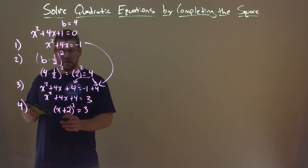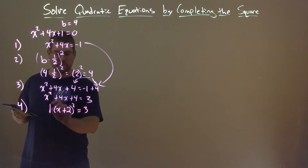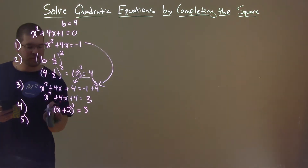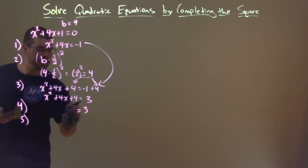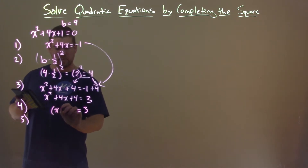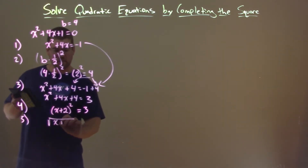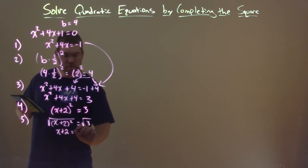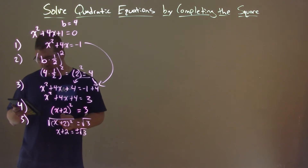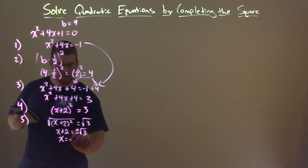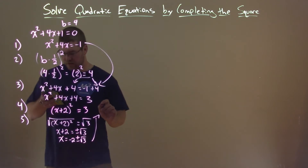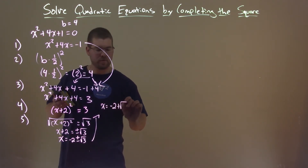We got a 3 on the right side. Then we use the square root property to solve — square root both sides. Step 5: we have x plus 2 squared equals 3, so taking the square root of both sides leaves us with x plus 2 equals plus or minus the square root of 3. Subtracting 2 from both sides gives x equals negative 2 plus or minus square root of 3. So our two values are negative 2 plus square root of 3, and negative 2 minus square root of 3.